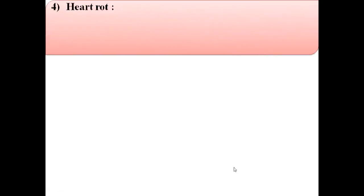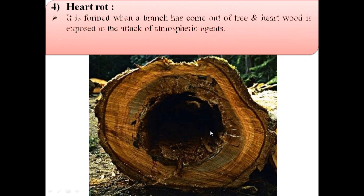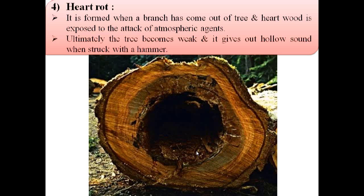Fourth defect due to fungi is heart rot. Heart rot is formed when a branch has come out of a tree and the heart wood is exposed to the attack of atmospheric agents. Ultimately, the tree becomes weak and it gives out a hollow sound when struck with a hammer.